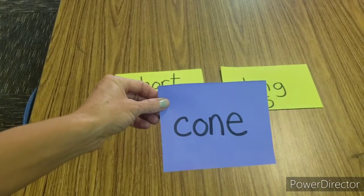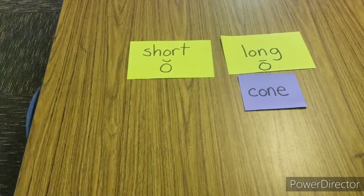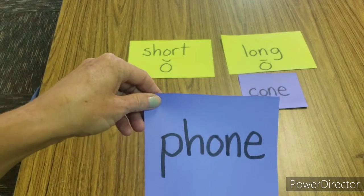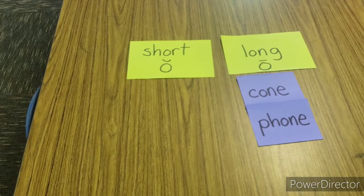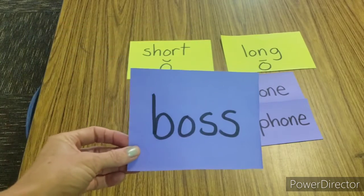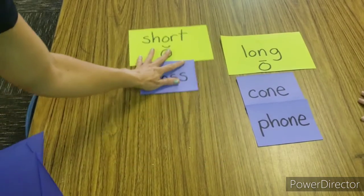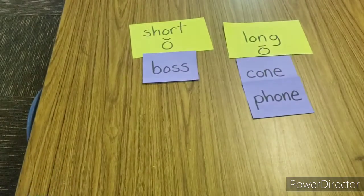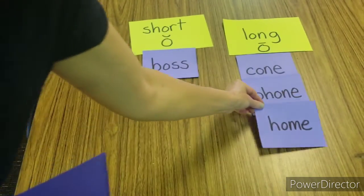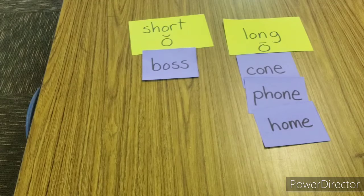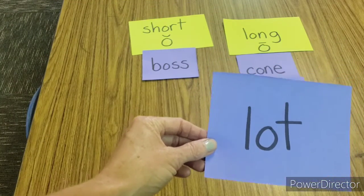Cone — you hear the O sound? So that's a long O word. Phone — we also hear the O sound in that. The word boss — that's a short O word, ah. And what about the word home? You can hear the O's name in it, so that's a long O. What about the word lot? That's short — ah.